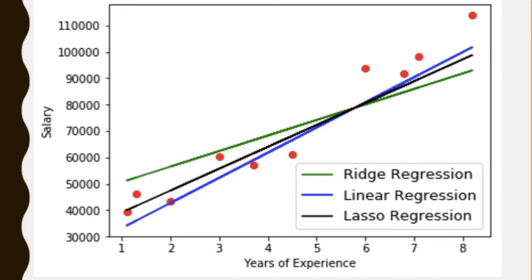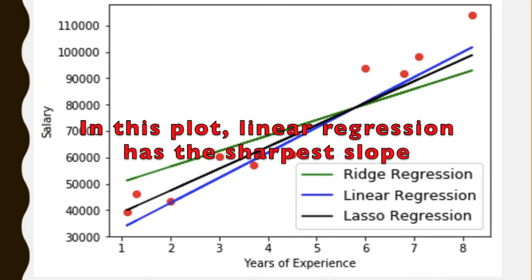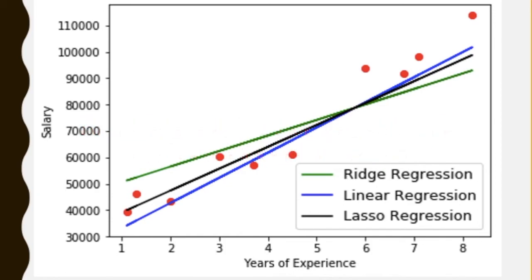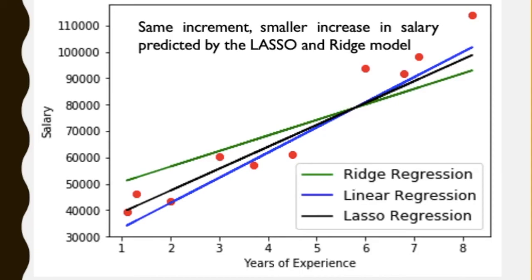As you can imagine, when β̂ is closer to zero, the slope of Lasso and Ridge regression coefficients are not as sharp as the linear model. As a result, take an example of this plot. For the same increment in the years of experience, Lasso and Ridge predict a smaller increase in the salary as compared to the linear model.